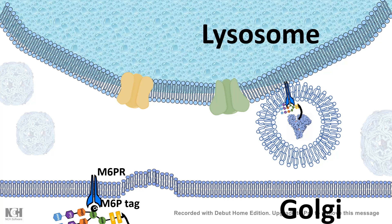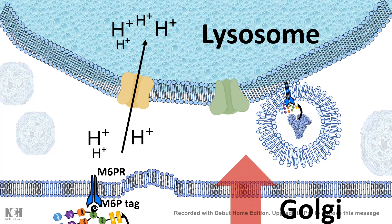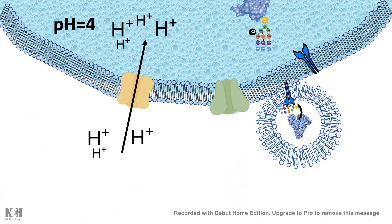The clathrin-coated vesicles fuse with the lysosomal membrane, delivering their contents — that is, the hydrolases or lysosomal enzymes — into the lysosome. Inside the lysosome, the pH is acidic, around 3 to 4, because specific proton pumps on the lysosomal membrane continuously pump protons inside. As a result, the interior of the lysosome is pretty acidic, causing the interaction between the mannose-6-phosphate tag and the mannose-6-phosphate receptor to disintegrate, releasing the hydrolytic enzyme inside.